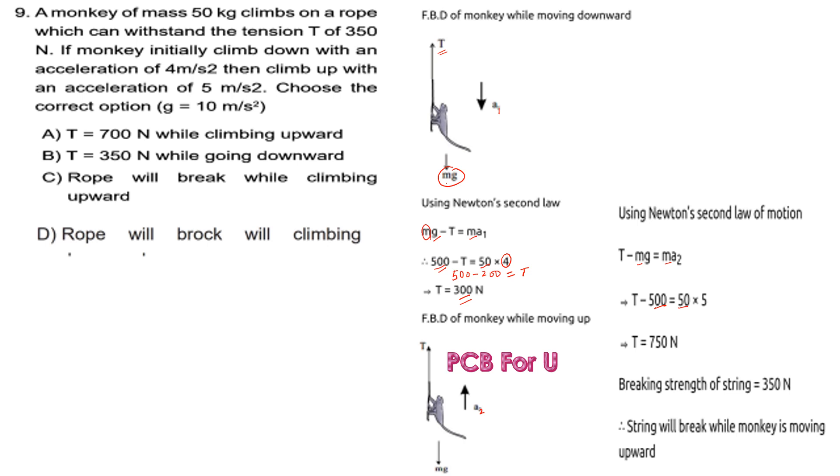For the monkey climbing up with acceleration: T minus mg equals ma₂. T minus mg equals 50 kg times the acceleration. So T minus 500 equals 250.